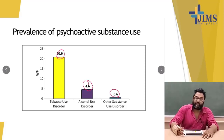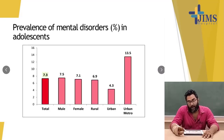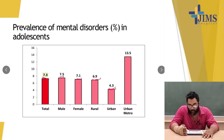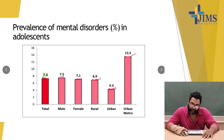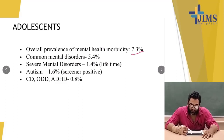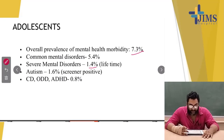The prevalence of mental disorder in adolescents: total was 7.3%, males 7.5%, females 7.1%, rural 6.9%, and metro was 30.5%. In adolescents, common mental disorders were 5.4%, severe mental disorders were 1.4%, autism was 1.6%, and conduct disorder, ODD, and ADHD combined were 0.8%.